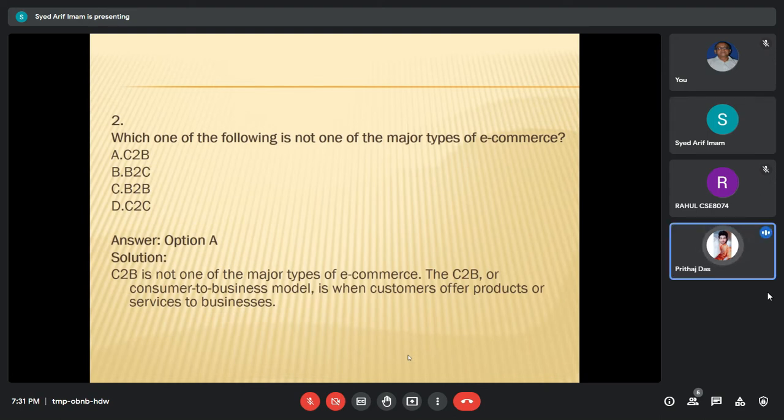This is Prithaj, roll number 78. This question is which one of the following is not one of the major types of e-commerce. The following options are C2B, B2C, B2B, and C2C. Now though the correct option is C2B, but I want to elaborate on this topic.